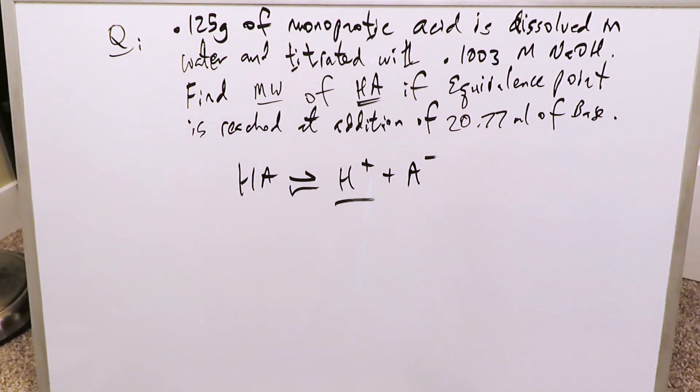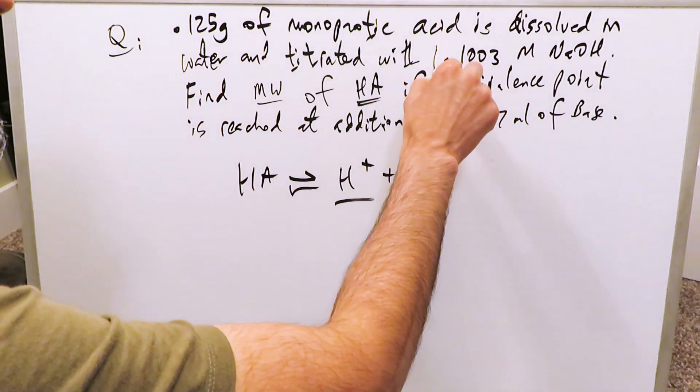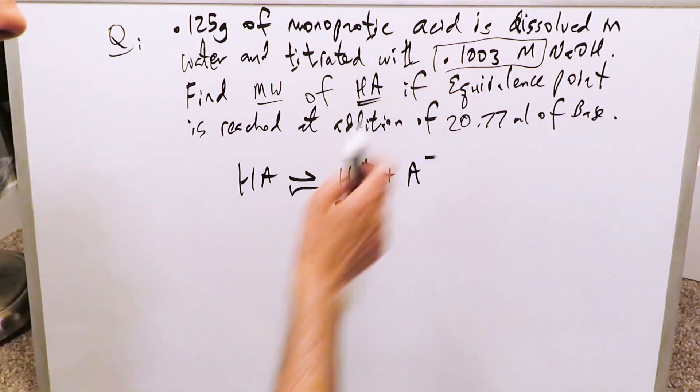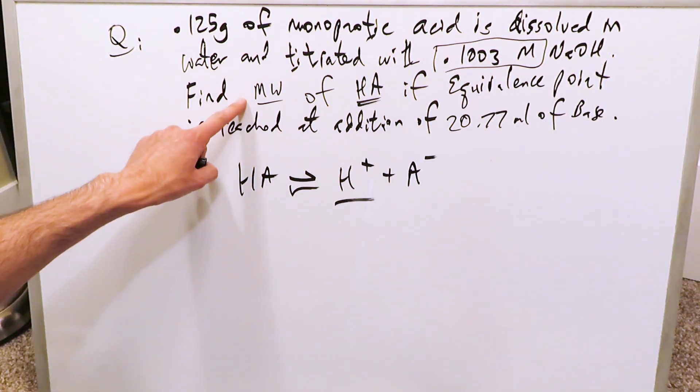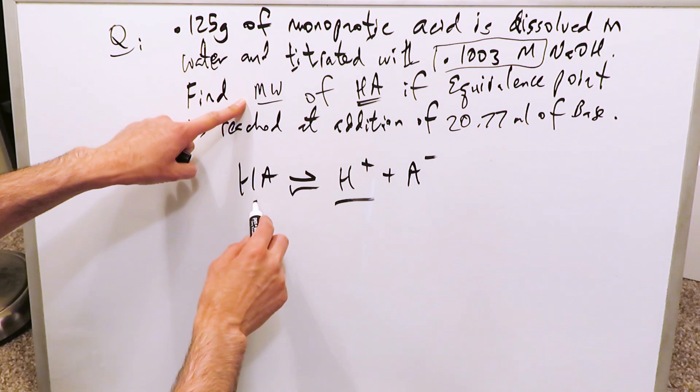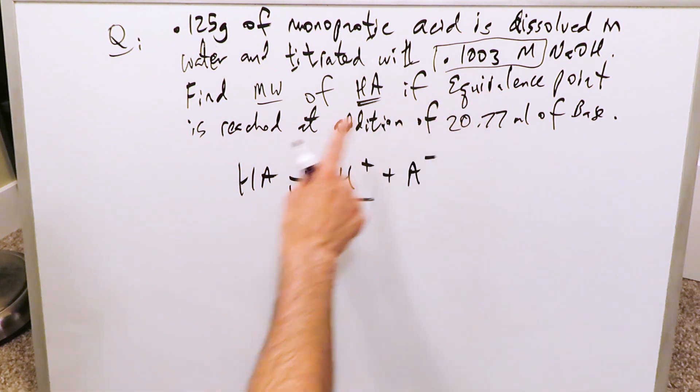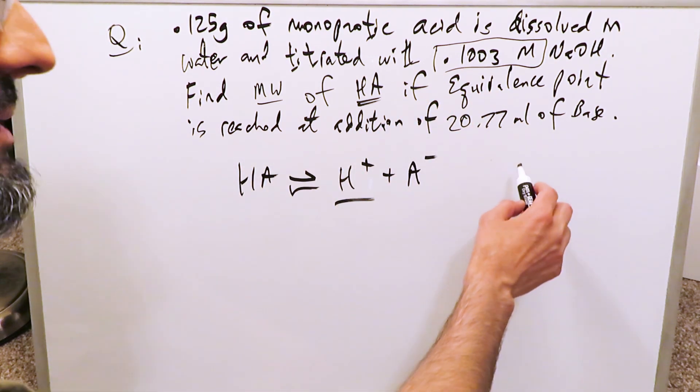We have 0.125 grams of monoprotic acid, which is dissolved in water, and it is titrated with 0.1003 molar sodium hydroxide. We have to find the molar weight or the molecular weight of this acid, I'm calling it HA, if equivalence point is reached at the addition of 20.77 milliliters of base.